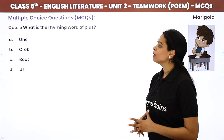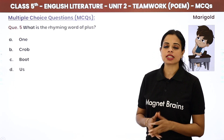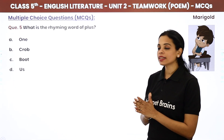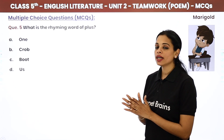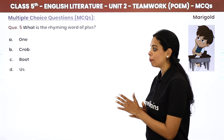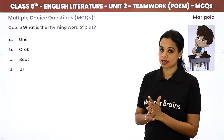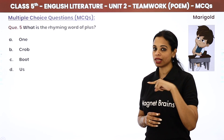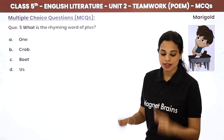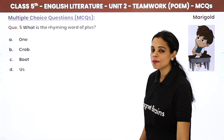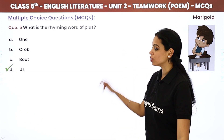What is the rhyming word of 'plus'? Options are one, crop, boot, or us. Plus and us — they rhyme. The answer is 'us', option D.